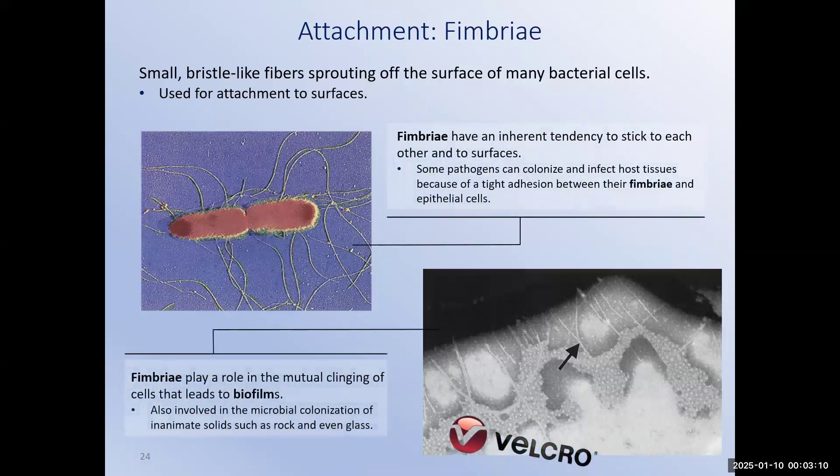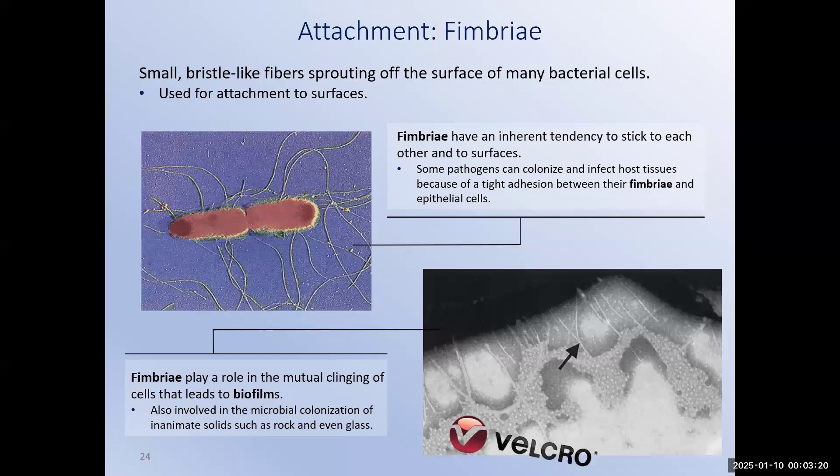Fimbriae are the bacterial version of Velcro. These are tiny little hair-like fibers that are spread across the surface of some bacteria. And like Velcro, they're inherently sticky. Fimbriae allow bacteria to stick to surfaces. Sometimes these surfaces are composed of other cells, like the lining of my urinary tract. In the case of a bacteria that causes urinary tract infections, sometimes these surfaces may be inanimate objects made of glass or plastics. Fimbriae play a significant role in the formation of biofilms in that they allow the bacteria to begin to colonize these surfaces. For example, biofilms that form on the surface of a plastic indwelling urinary catheter are the direct result of bacteria using their fimbriae to stick to the plastic of the catheter and to each other.